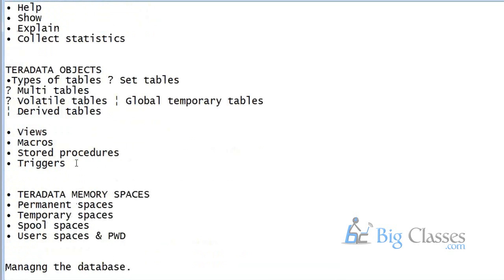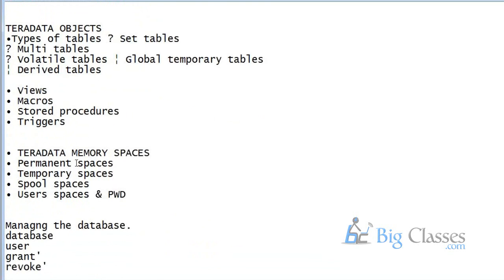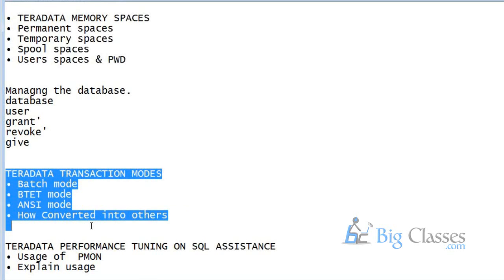Then comes join strategies and types — how different kinds of joins work in the Teradata environment — plus some utility commands and different types of database objects: tables, views, macros, stored procedures, and triggers. We will also cover some DBA activity including space management and grant/access/revoke commands, then transactions — single transactions and multiple transactions through a batch process submitted to the Teradata server.